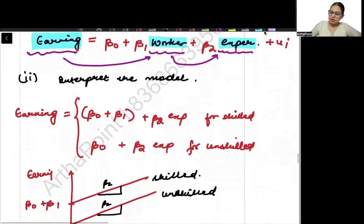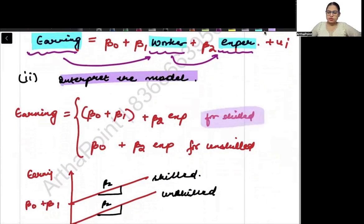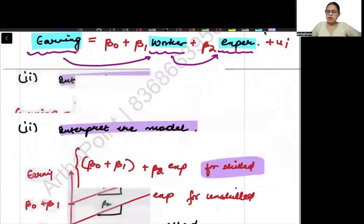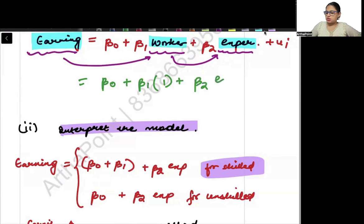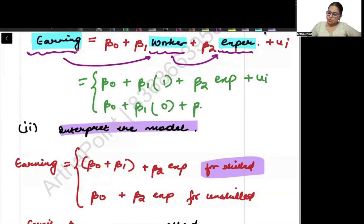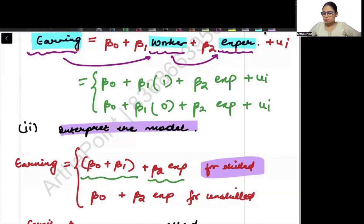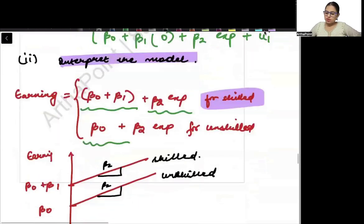Now it says interpret the model. If it is a skilled worker, instead of worker I will put 1, so this gives: beta 0 plus beta 1 into 1 plus beta 2 experience plus UI. If it is an unskilled worker, I put beta 0 plus beta 1 into 0 plus beta 2 experience plus UI. So I get: skilled → beta 0 plus beta 1 plus beta 2 experience; unskilled → beta 0 plus beta 2 experience.